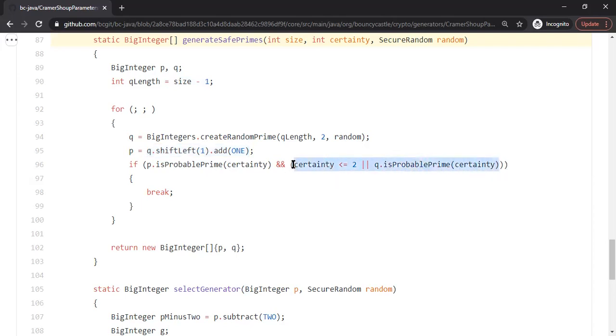For now, you can ignore this. In any case, this is just to do with certainty. So you can see here that they're just generating the prime q first. And then they go ahead and check whether p itself is a prime by doing another call to is probable prime function.